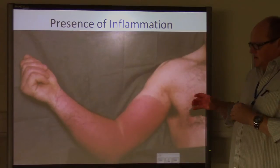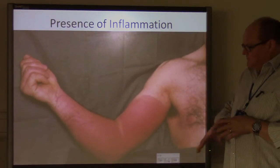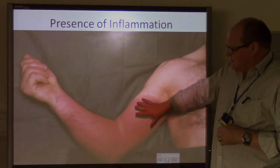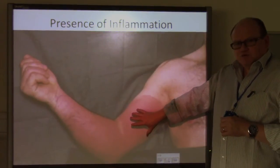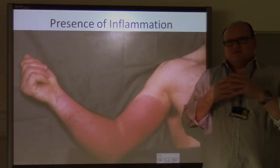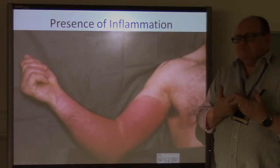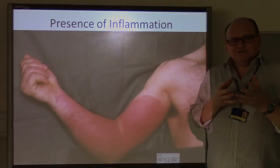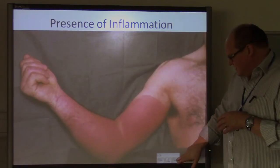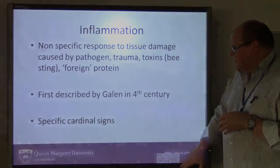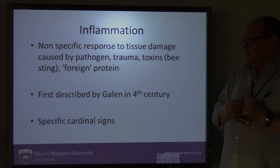This image here is meant to illustrate what happens when an area of the body becomes inflamed. The most obvious thing is the redness, which is probably one of the most obvious outward signs of inflammation. The key signs of inflammation are sometimes referred to as the cardinal signs, and we'll come on to what they are in a minute.